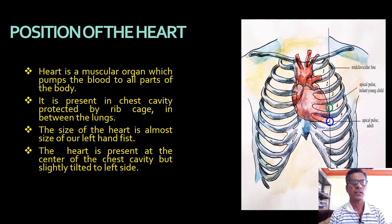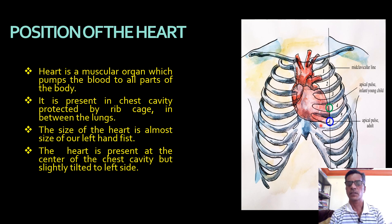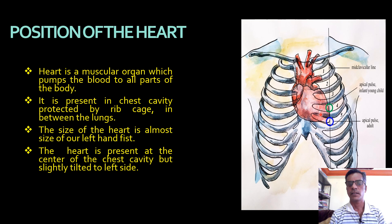In this video we are going to discuss the exact position of the heart. Observe the image on the right side of the screen. This is the chest cavity, where our heart is present. Inside the rib cage, the heart is present. It is conical in shape, present in the center of the rib cage but slightly tilting towards the left side. The size of the human heart is almost the size of our left hand fist.